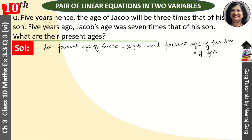Let's look at the question. Five years hence, the age of Jacob will be three times that of his son. Five years later, if age is x now, what will be your age five years later? If your age is 15 years this summer, what will be your age five years later? 15 plus 5, 20.